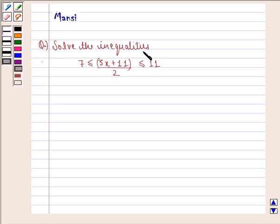The question says solve the inequality 7 is less than or equal to (3x + 11) divided by 2 is less than or equal to 11.